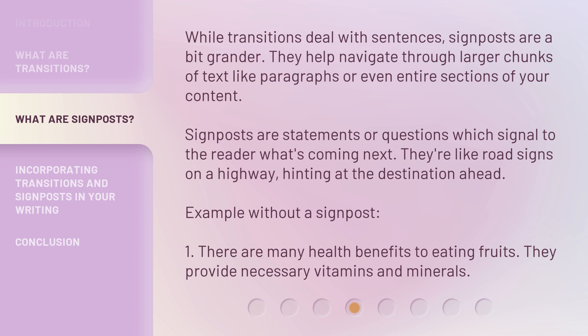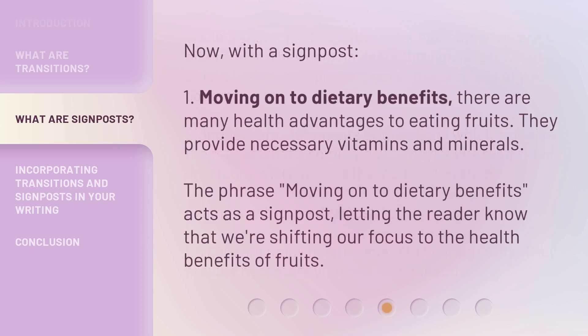Example without a signpost: 1. There are many health benefits to eating fruits. They provide necessary vitamins and minerals. Now, with a signpost: 1. Moving on to dietary benefits. 2. There are many health advantages to eating fruits. They provide necessary vitamins and minerals. The phrase 'moving on to dietary benefits' acts as a signpost, letting the reader know that we're shifting our focus to the health benefits of fruits.